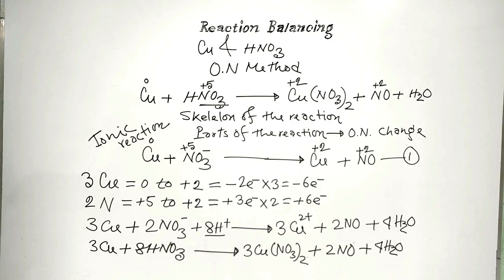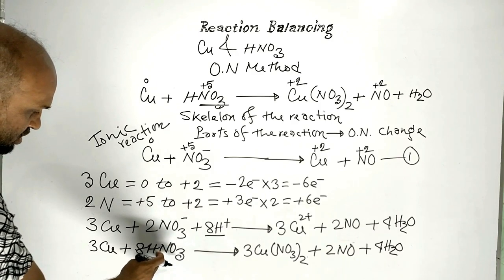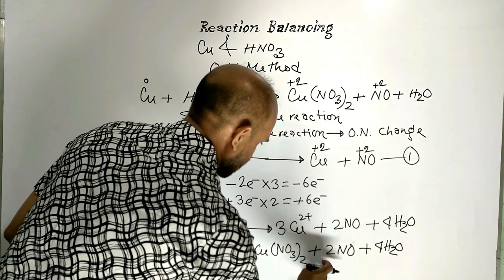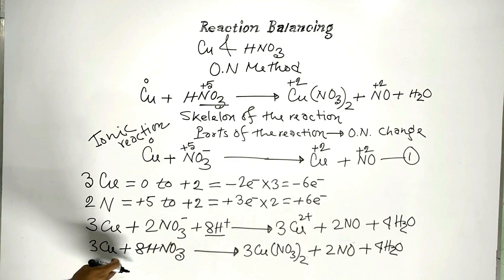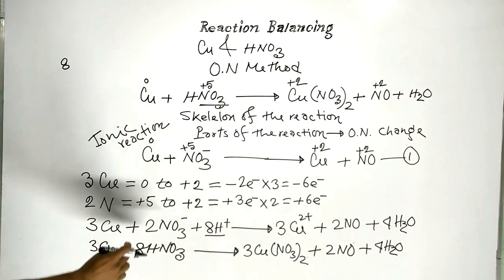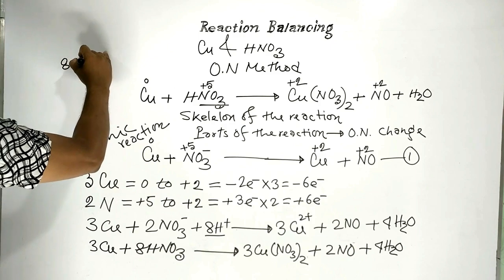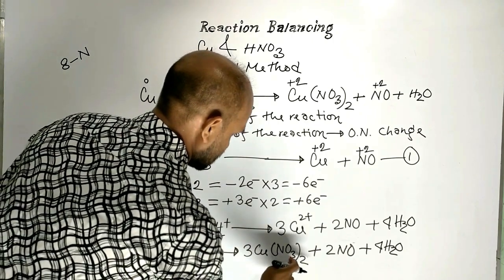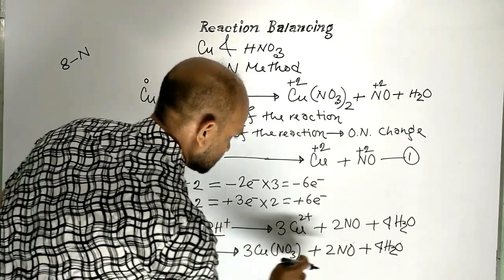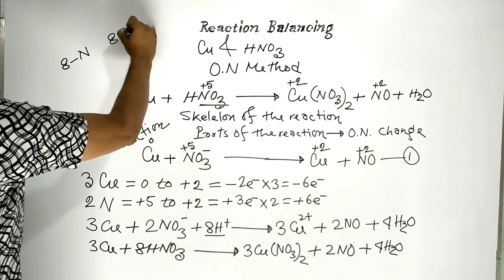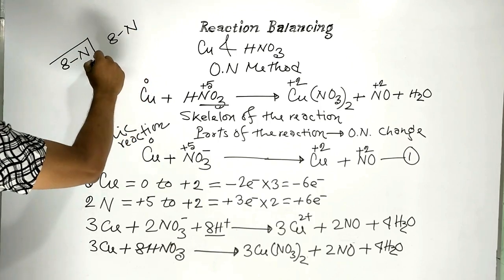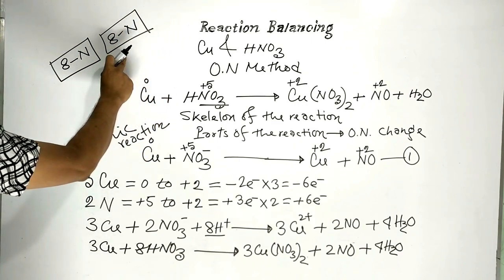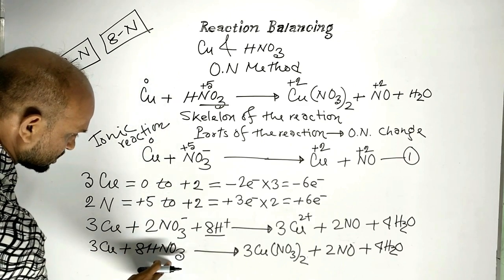Now let us check the number of nitrogen and oxygen atoms on the left side and on the right side. On the left side there are 8 nitrogen atoms, and on the right side there are also 8 nitrogen atoms. Nitrogen is balanced.